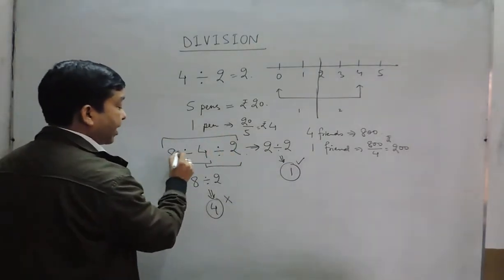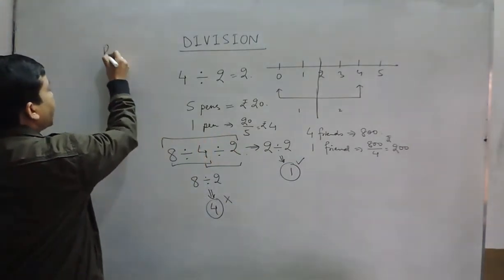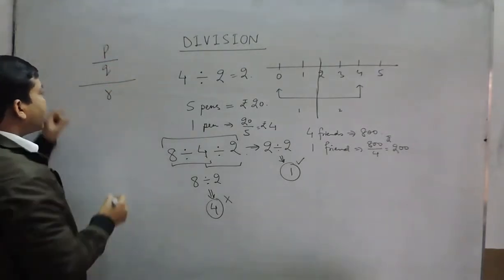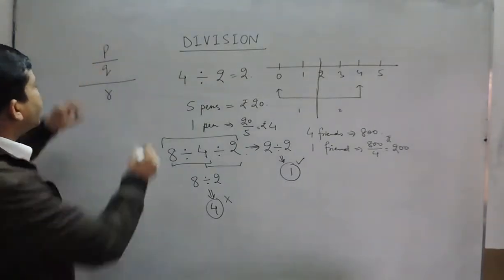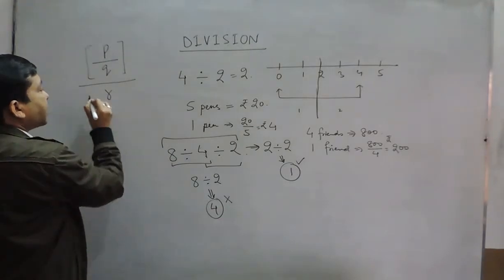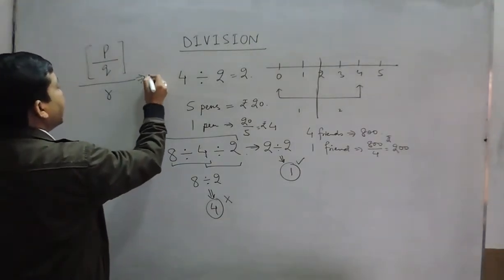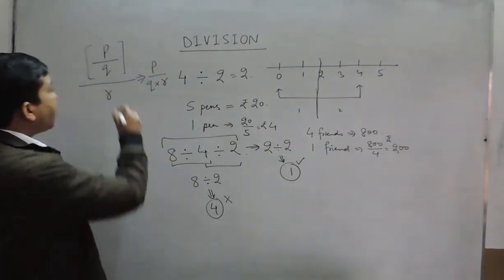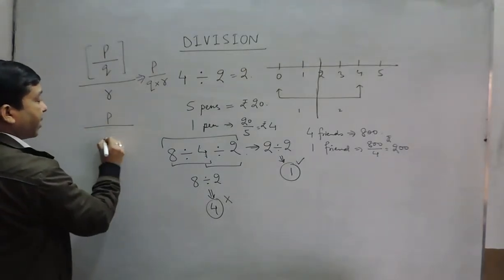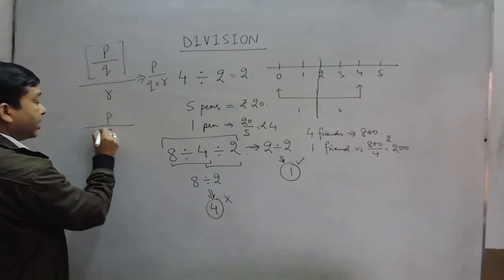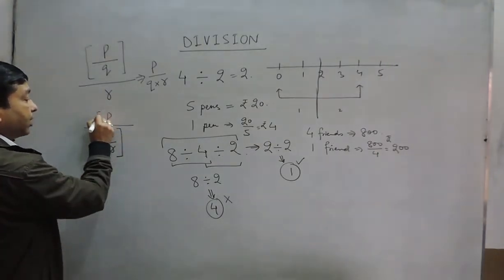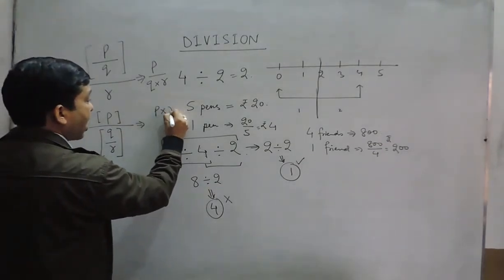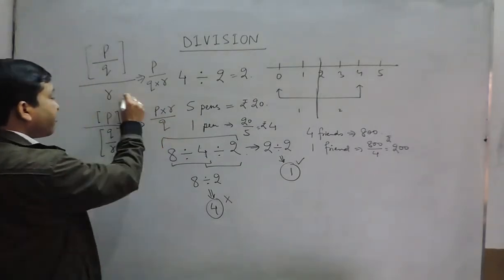If there are two division operations, first we solve the division on the left-hand side and then solve it further. If we talk about division where three numbers are there, we can write it as p divided by q divided by r. This has to be written as p divided by q times r. If I'm writing it another way, p divided by q upon r, where q upon r is the denominator, this is written as p times r upon q.